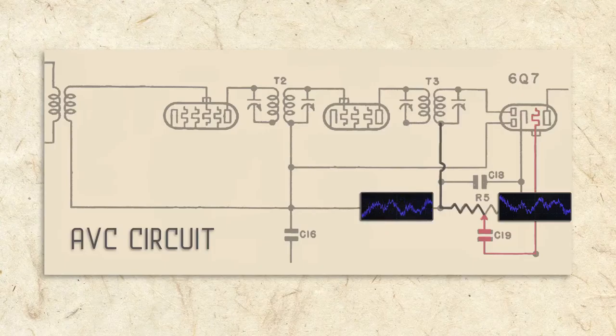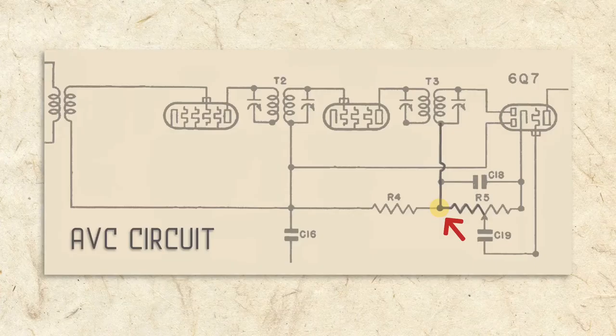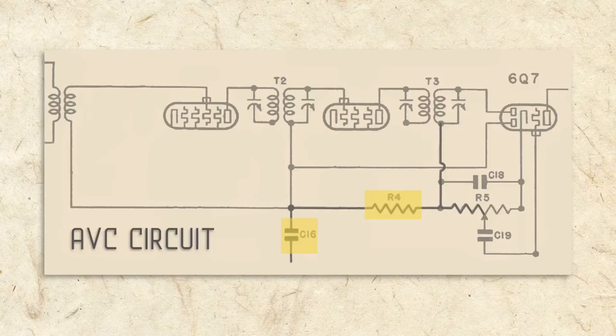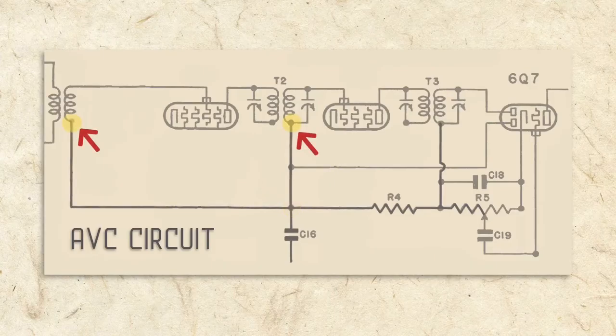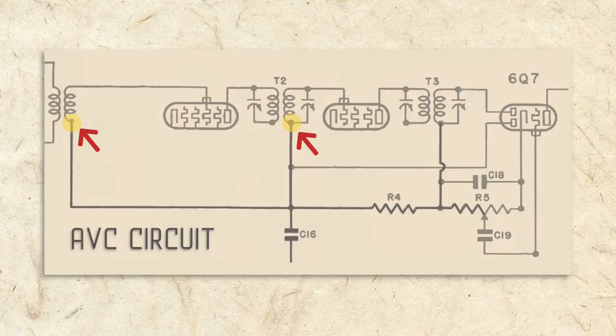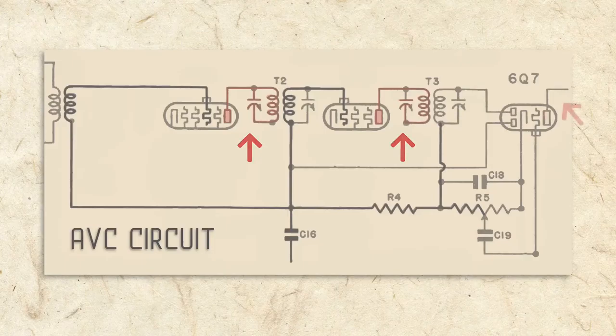The AVC circuit takes this opposite negative signal and sends it to resistor R4 and capacitor C16, which adjust the voltage and smooth the signal. From there, the negative signal is fed back to the secondary coils of the antenna and first IF transformers. This reduces the signals going to the converter and IF tubes, which reduces their output and volume level.